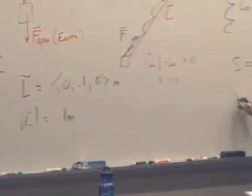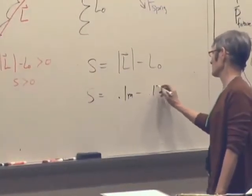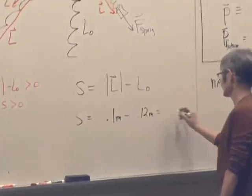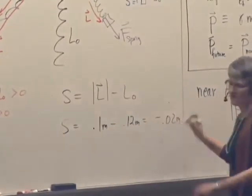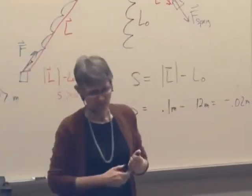And so the stretch is 0.1 meter minus 0.12 meters, which is negative 0.02 meters. So that's the stretch. Comes out negative because the spring is compressed. That's right.